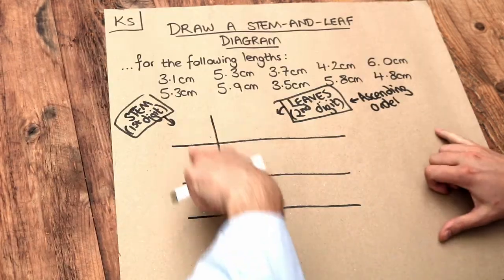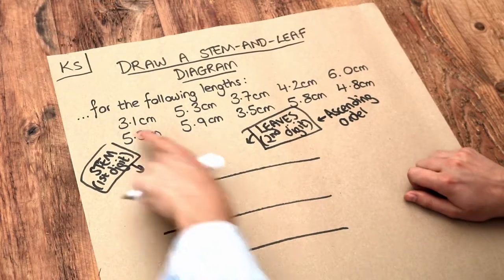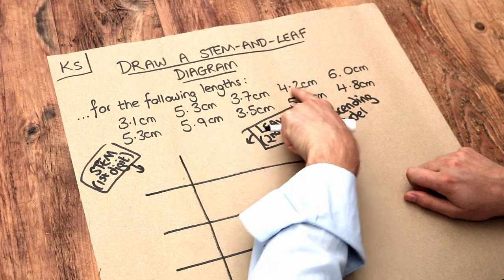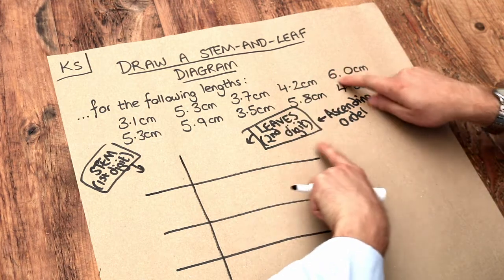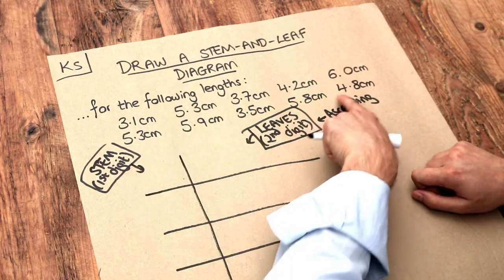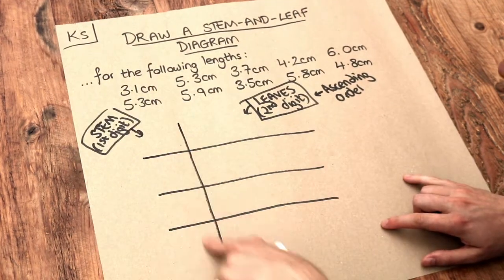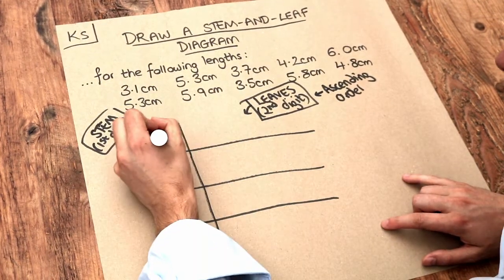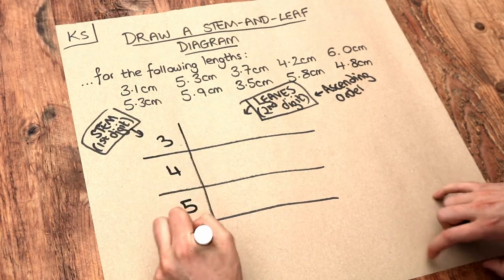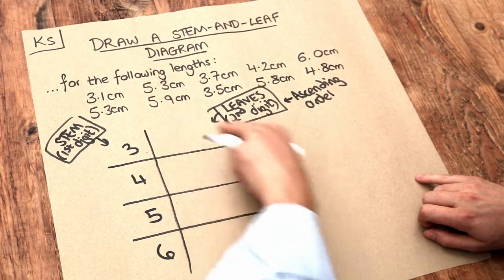Let's think about these first digits — these need to be in ascending order as well. What first digits do we have? Well, we've got three, four, five, and six — every value between three and six as the first digit. So let's put those as the stems: three, four, five, six.